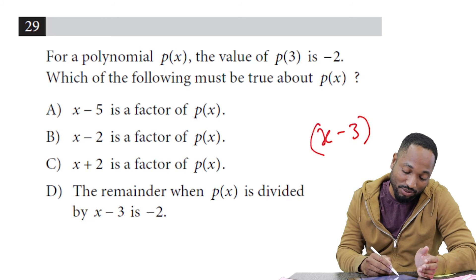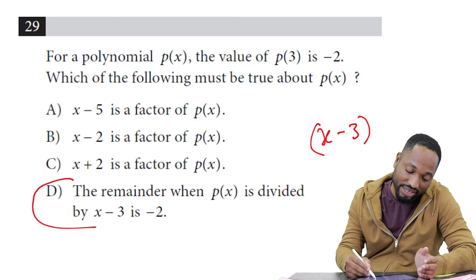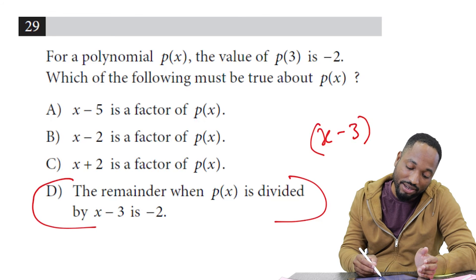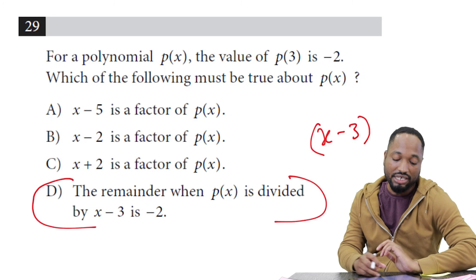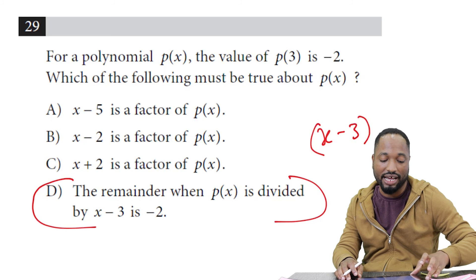Which is why this is one of the easiest questions for SAT. The remainder when p(x) is divided by x - 3 is -2. D is the answer.